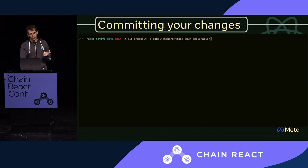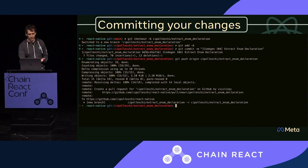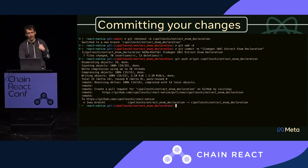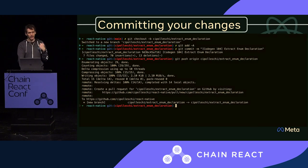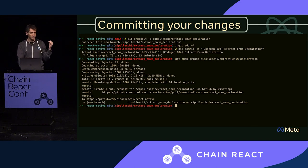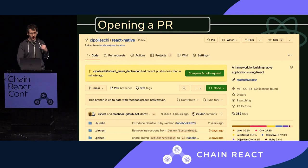Once everything is written and all tests are passing, we need to commit our changes. The first step is to create a branch. In React Native, we try to follow the convention of your-username/branch-name. This makes it easier for everyone to look through branches and immediately figure out which changes are yours and pick the right branch to work on.